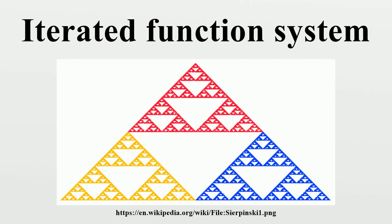The most common algorithm to compute IFS fractals is called the chaos game. It consists of picking a random point in the plane, then iteratively applying one of the functions chosen at random from the function system to transform the point. An alternative algorithm is to generate each possible sequence of functions up to a given maximum length, and then to plot the results of applying each of these sequences to an initial point or shape. Each of these algorithms provides a global construction which generates points distributed across the whole fractal. If a small area of the fractal is being drawn, many of these points will fall outside of the screen boundaries, making zooming into an IFS construction drawn in this manner impractical.